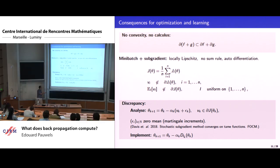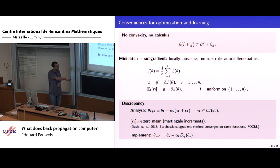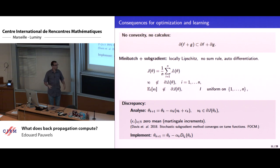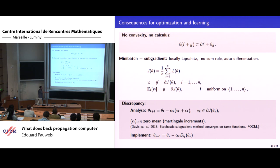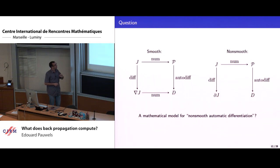There is a nice example in a 2018 paper compatible with the deep learning framework. But what is implemented in practice looks different — it's the output of non-smooth backpropagation on some network architecture. We need to understand this if we want to prove and understand the theory behind the stability properties of such numerical schemes. We need a mathematical model for non-smooth automatic differentiation.